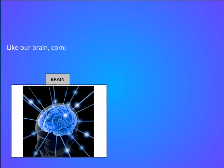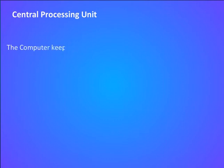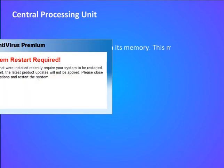Like our brain, the computer also has an artificial brain which is known as the CPU — the central processing unit. The computer keeps information in its memory, and this memory resides in the central processing unit.